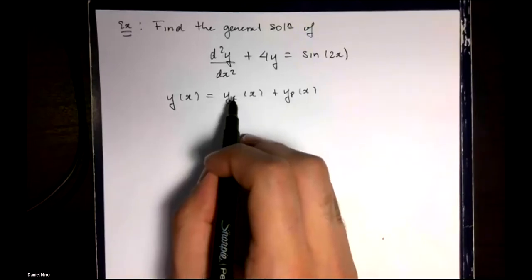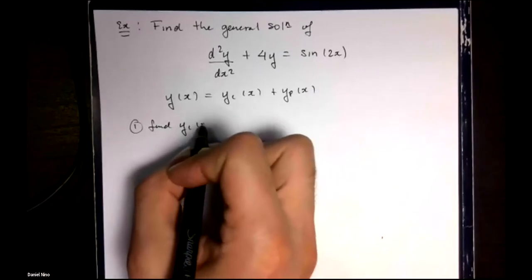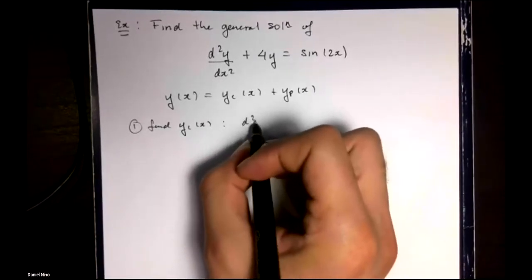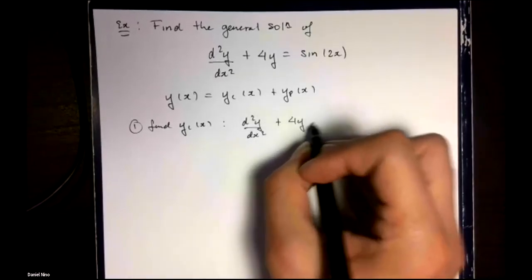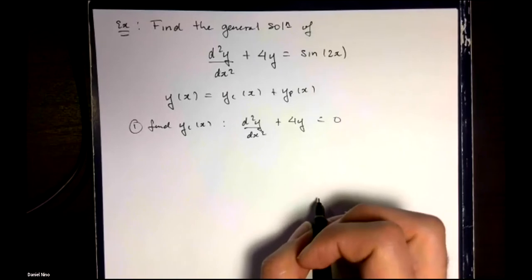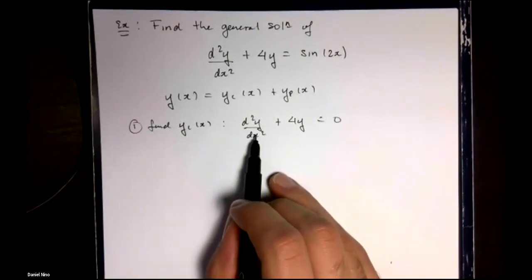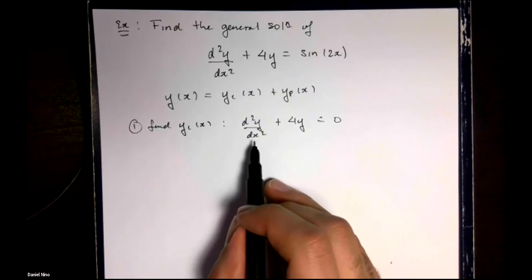We'll begin by finding the complementary solution, which is the solution to this differential equation. As before, we're going to guess that the solution has the form of an exponent, which will leave us with an auxiliary equation.